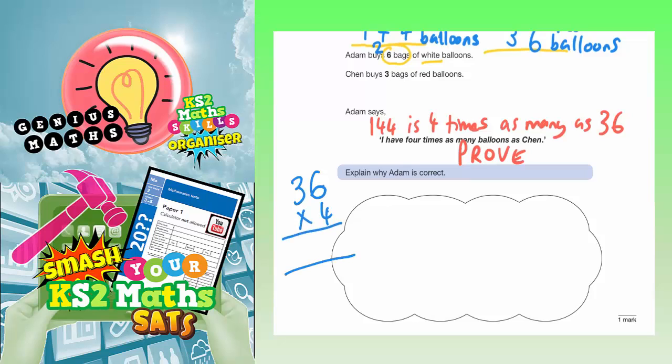Four sixes are 24. Put the 4 in, carry the 2. Four threes are 12, plus the 2 is 14. So that's 144, which is four times as many as 36. So we know that Adam is correct.